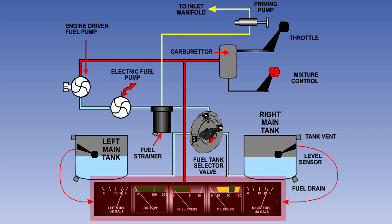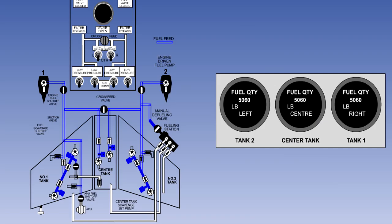The fuel system instrumentation on a light aircraft will consist of contents and pressure gauges as shown here. On large aircraft it is necessary to provide more information than this to the crew.